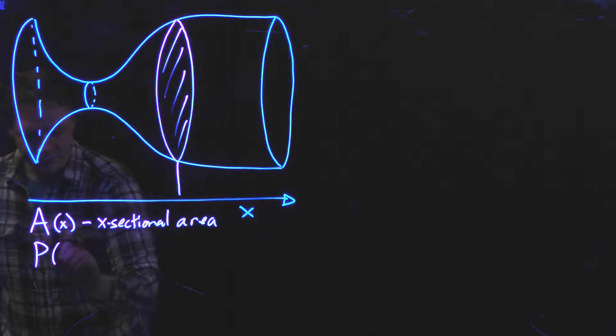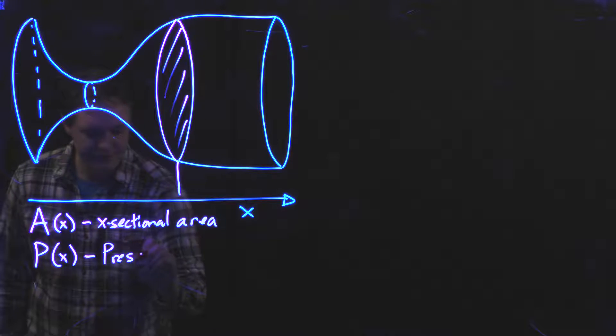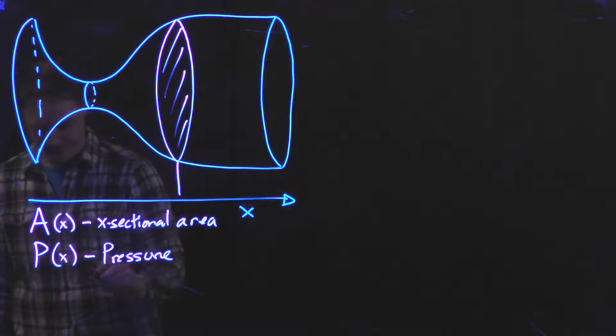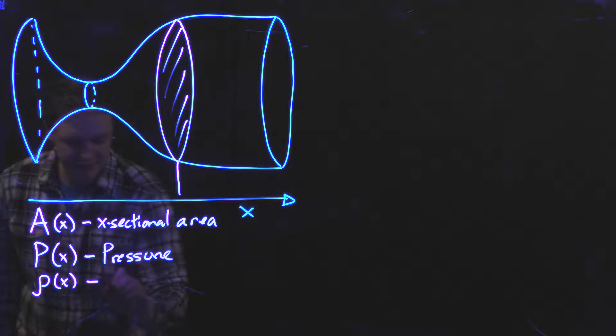There is P, capital P, as a function of x. This is the pressure in the exhaust gas. There is ρ, lowercase rho, as a function of x. This is the density of the exhaust gas.